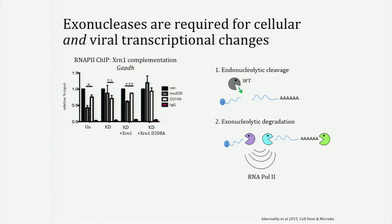When we complement the knockdown with a catalytic mutant of XRN1, D208A, we're unable to complement the knockdown and you actually lose the transcriptional repression. So not only is XRN1 required for the pathway, but its active degradation of the cleavage product is really what's important here.